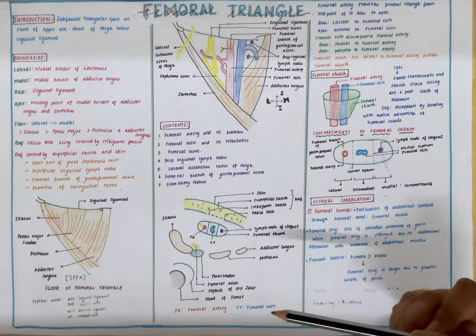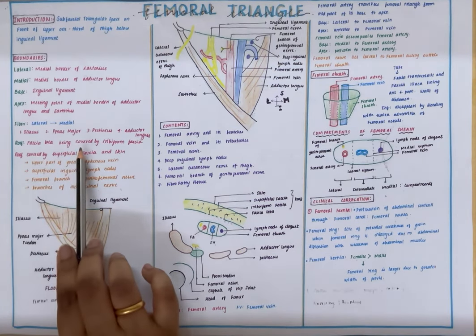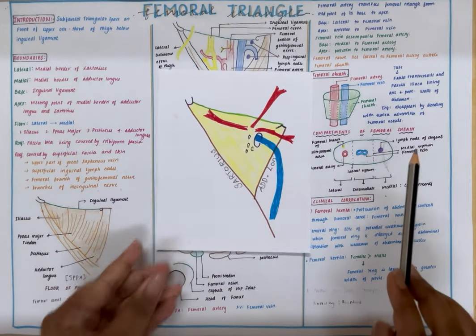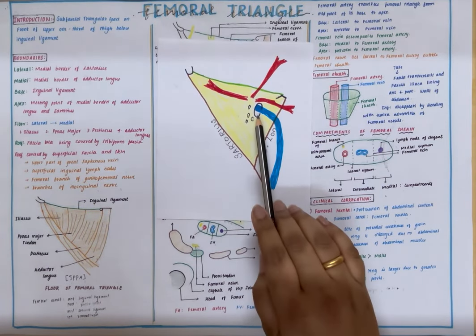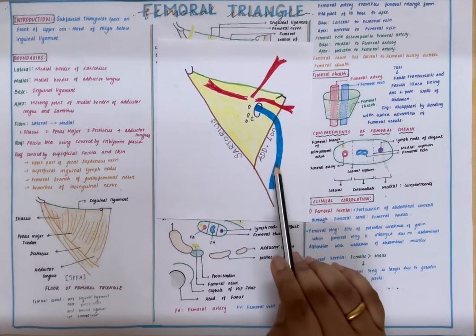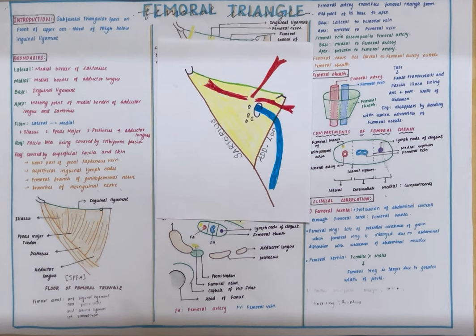Now coming to the roof, the roof is formed by fascia lata. Fascia lata is a modification of the deep fascia which is covering the femoral triangle. Now the fascia lata has an opening called the saphenous opening through which the great saphenous vein enters to drain into the femoral vein, which is a content of femoral triangle.